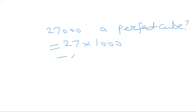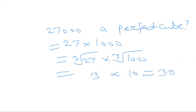So we have to find cube root of 27 and cube root of 1000. Now cube root of 1000 is 10 because 10 times 10 times 10 is 1000, and cube root of 27 is 3. So it is equal to 30.